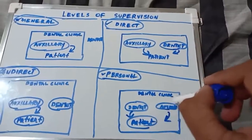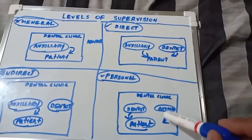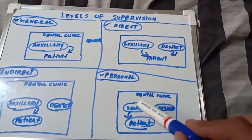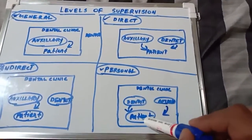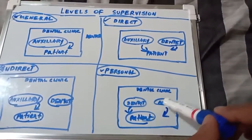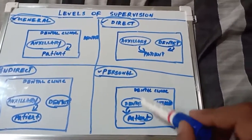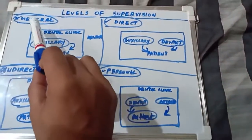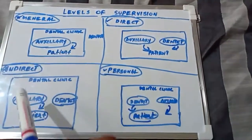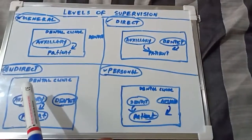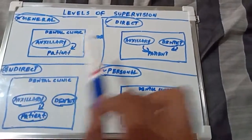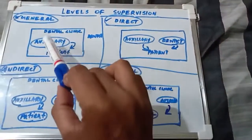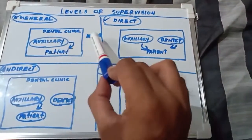In personal supervision, the dentist is actually working on the patient, not the auxiliary. The auxiliary is helping the dentist. So these are the four levels of supervision: general, indirect, direct, and personal supervision.